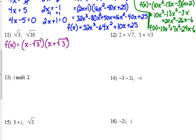That's the difference of — not perfect squares — but that's the factoring of the difference of squares. We're going to do the same thing with the square root of 10. The nice thing about this is we're not going to end up with square roots in our final answer.